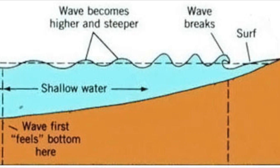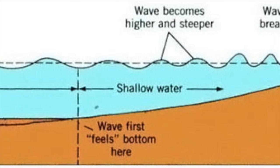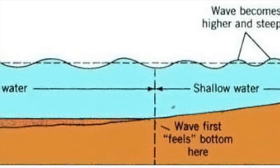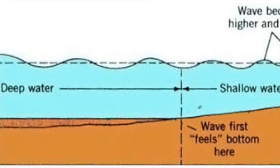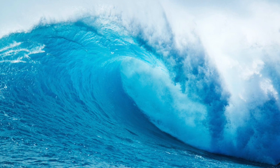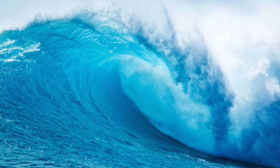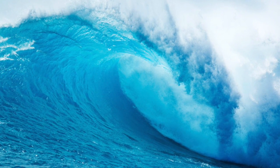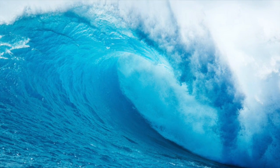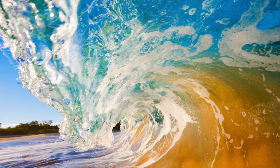As waves move into shallow water, the bottom of a wave decreases in speed. At a certain point, the top of the wave will overtake it and will break. When waves reach the shore, the energy at the front of the wave will slow down due to friction with the shallow bottom.